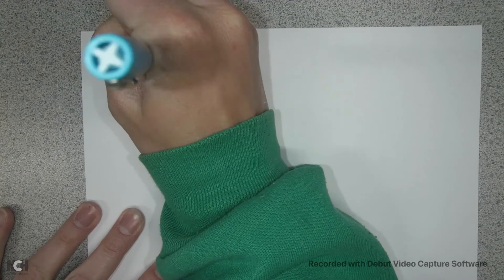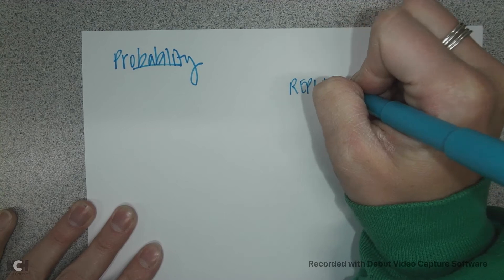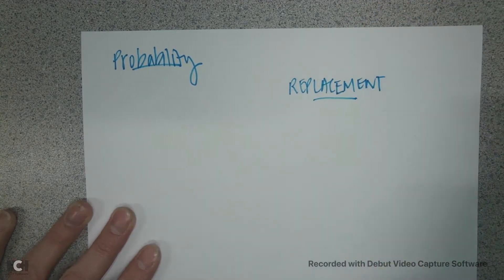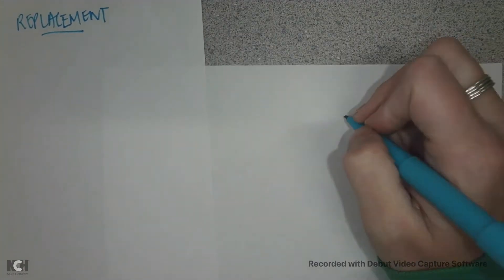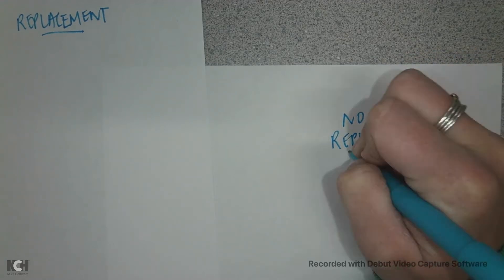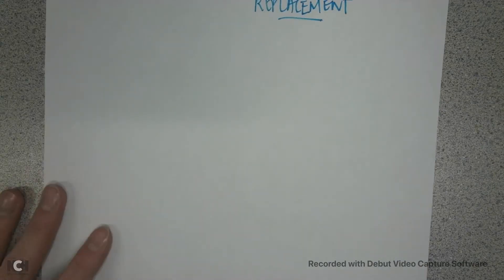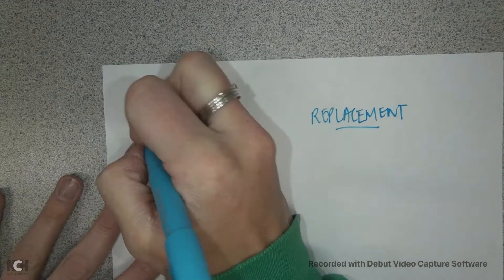Today we are going to be talking about probability and two ideas: one idea is if you replace, and one idea is if you don't replace. So we're going to talk about replacement and then no replacement.